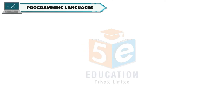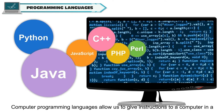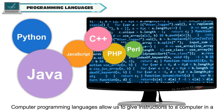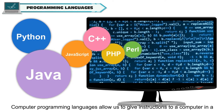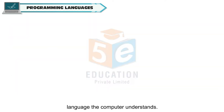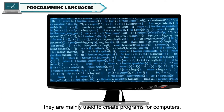Programming languages. Computer programming languages allow us to give instructions to a computer in a language the computer understands. A programming language contains keywords that can be used to write instructions and they are mainly used to create programs for computers.